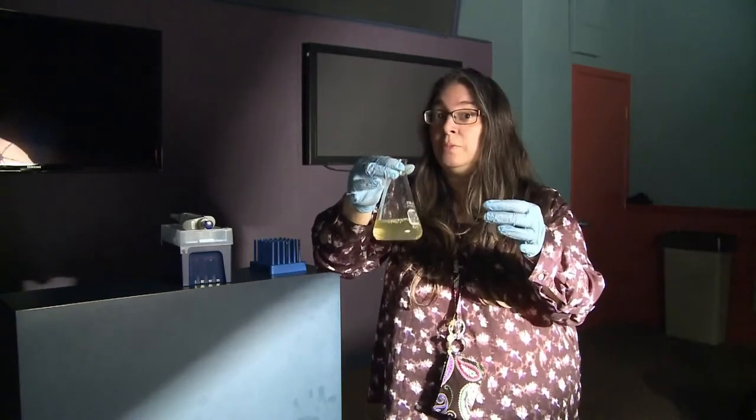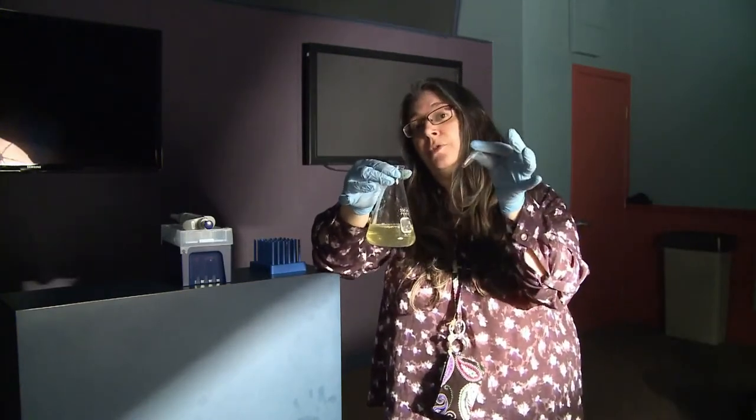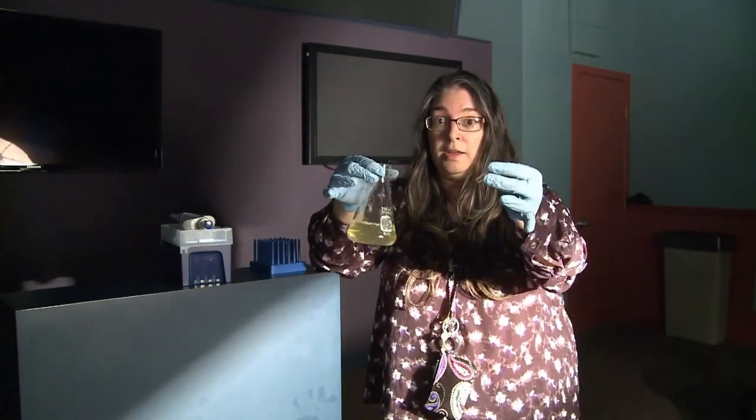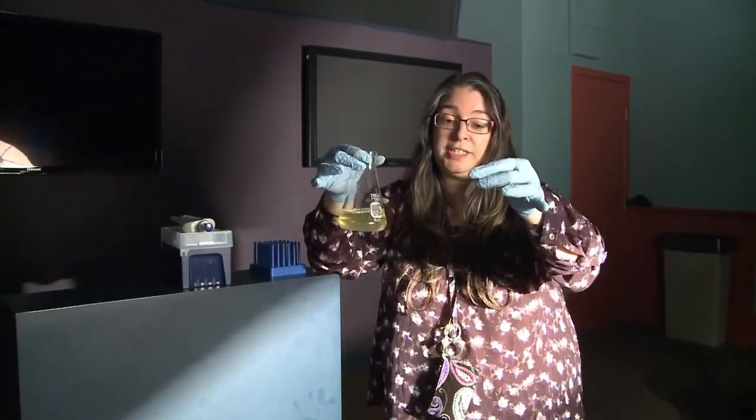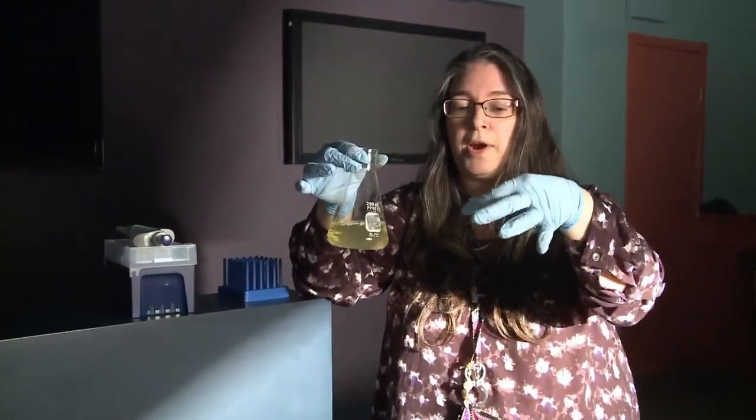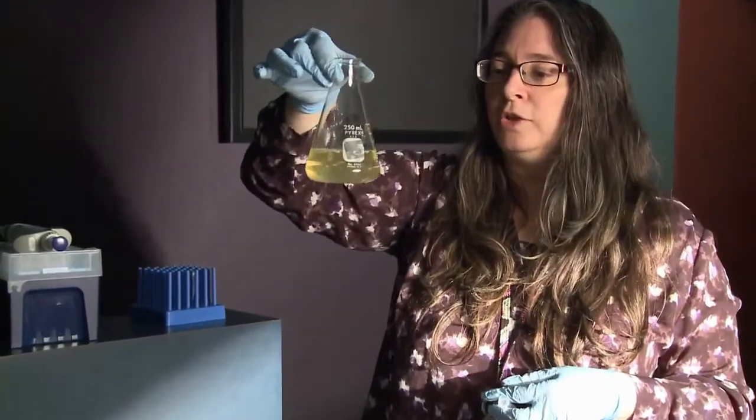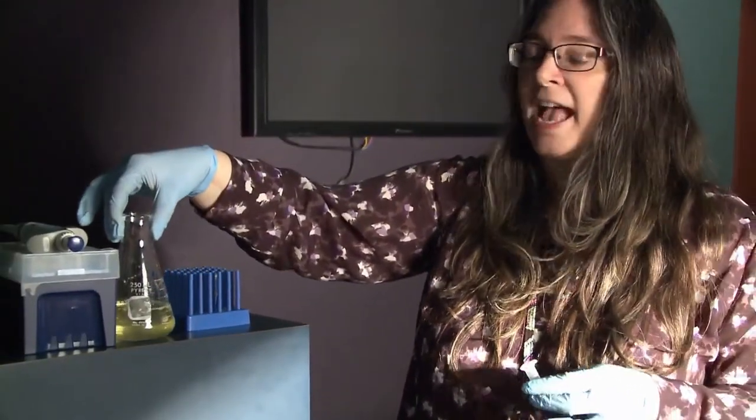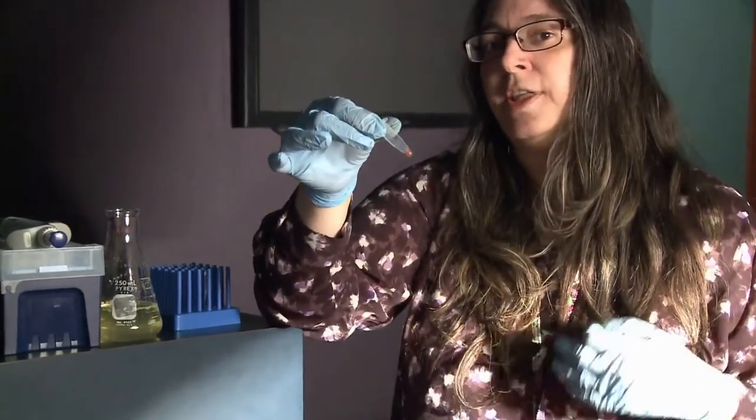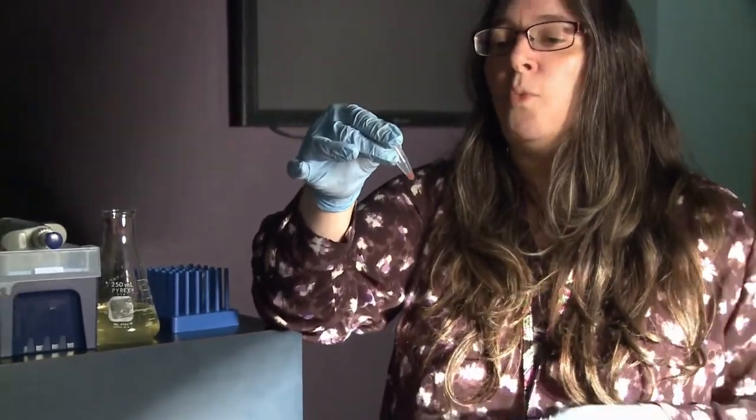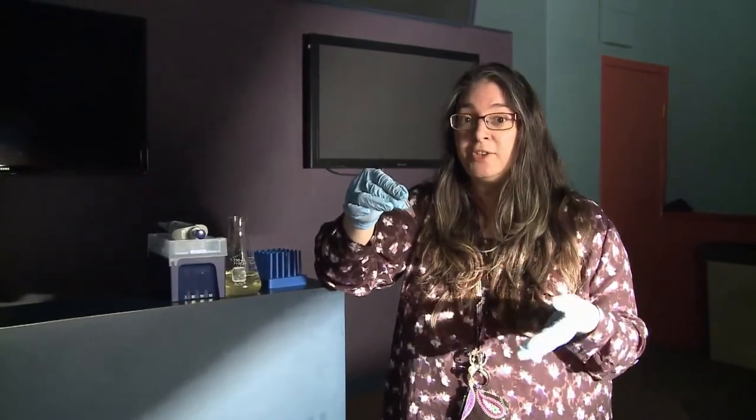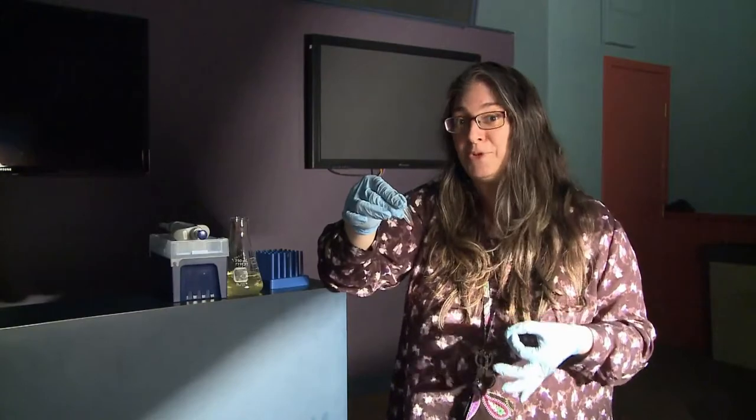We're going to see how luminol reacts when it comes in contact with real blood. The blood we're using is from chickens, actually from chicken livers bought at the supermarket. We're going to mix the compound luminol. Luminol has an interesting reaction when it comes in contact with blood cells. It reacts with the iron that's connected to the hemoglobin. When it comes in contact, a chemical reaction occurs that releases energy in the form of blue light or blue photons.